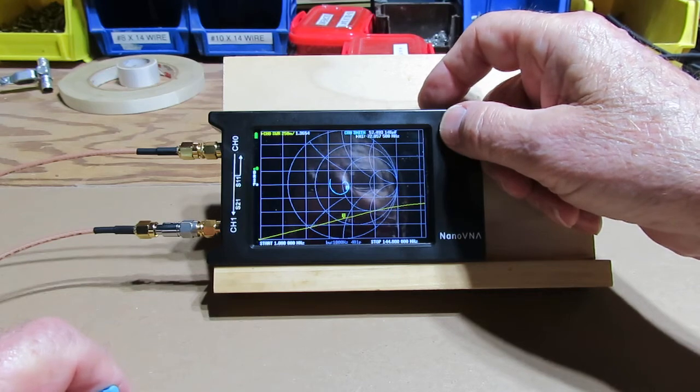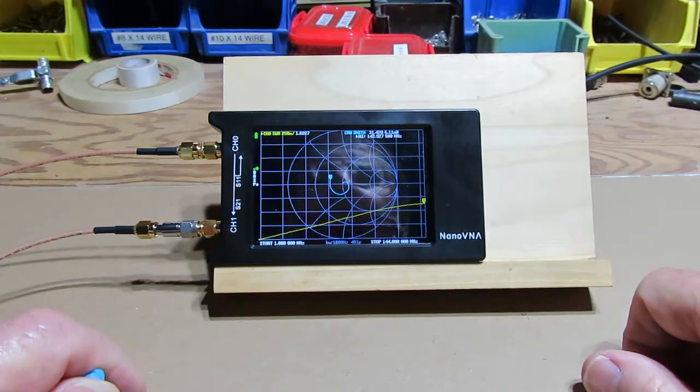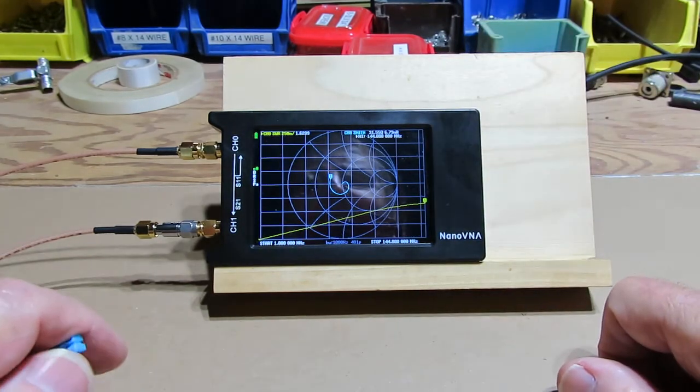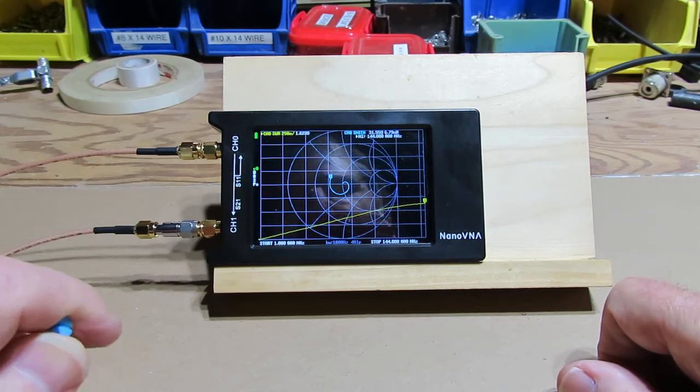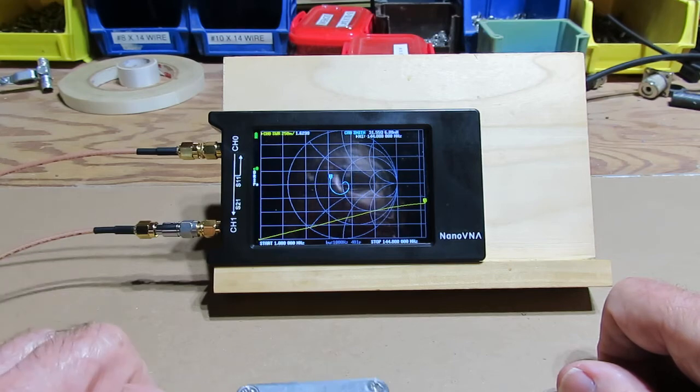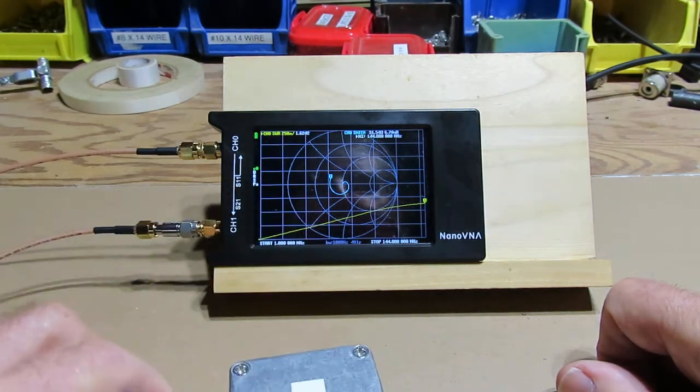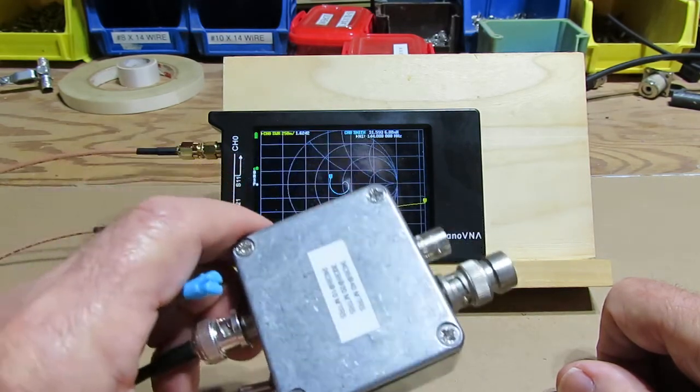But as you start going higher, up to 2 meters, there's 144 megahertz. Now the insertion is 1.6 to 1. So that's pretty bad for insertion. I wouldn't really want to use that in 2 meters. Could you? Yeah, it won't hurt anything. But it's not a good switch for 2 meters. But for HF, it's not bad.